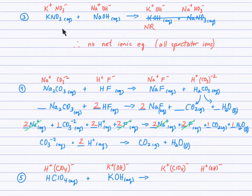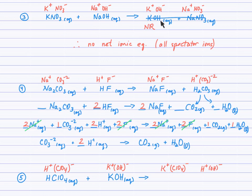For example 3: potassium nitrate and sodium hydroxide undergo double displacement to form potassium hydroxide and sodium nitrate. It turns out both products are aqueous, and neither decomposes to form a gas, so there is no reaction. When there's no reaction, all the ions end up canceling — they're all spectator ions, meaning there is no chemical change and no net ionic equation to write.